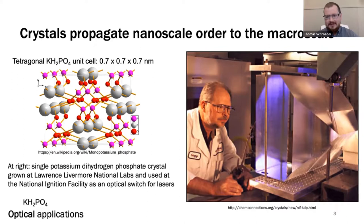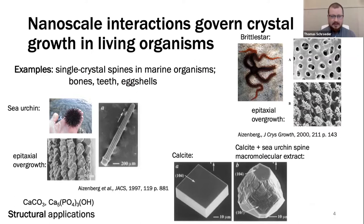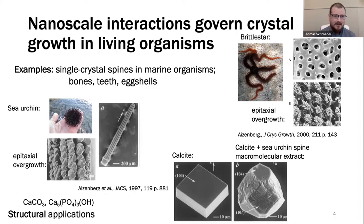Another piece of this puzzle is the idea that you can use nanoscale interactions to control the morphology, polymorph, and properties of crystalline materials. A great example exists in marine life. Marine organisms often have skeletal structures made of calcite — a polymorph of calcium carbonate. In many cases these structures are single crystalline, but they don't look like most crystals you'd normally think of. Joanna Eisenberg earlier in her career studied some of these structures expressed by marine organisms, including sea urchin spines and brittle star skeletal elements — which form cool porous structures out of single crystalline calcite.